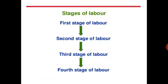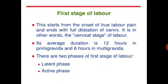Labor has four stages: first, second, third, and fourth stage. The first stage of labor starts from the onset of true labor pain and ends with full dilation of the cervix. It is also known as the cervical stage.